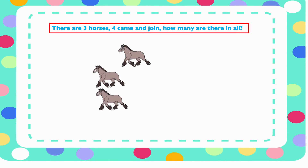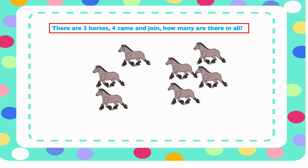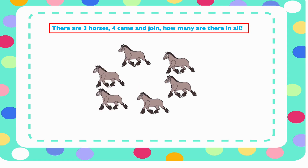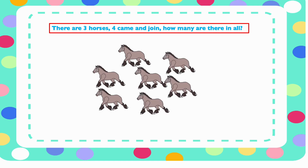There are eight cars all together, so four plus four is equal to eight. There are three horses and four more joined. How many are there all together? Let's count the horses: one, two, three, four, five, six, seven. So three plus four will give us seven.